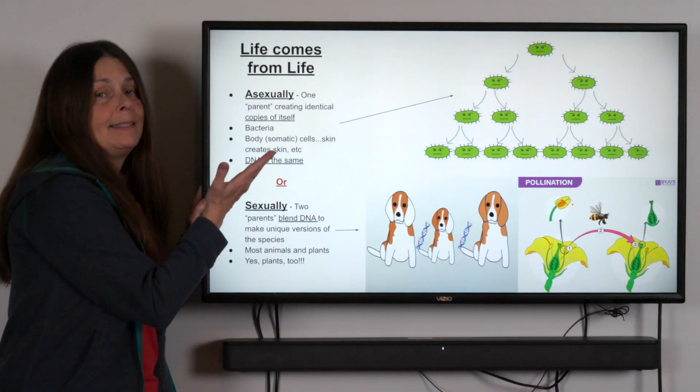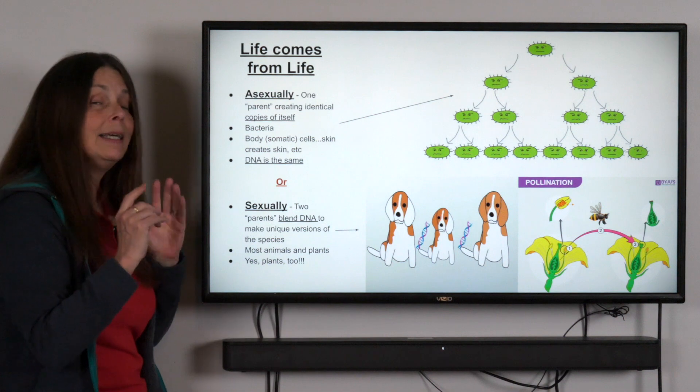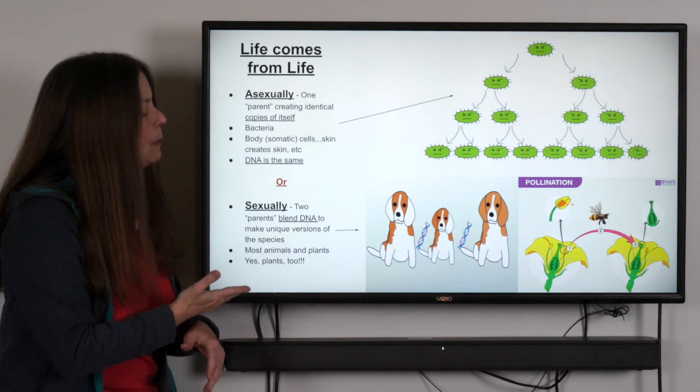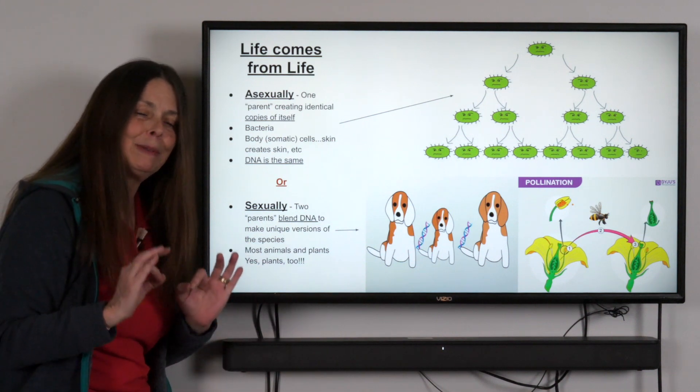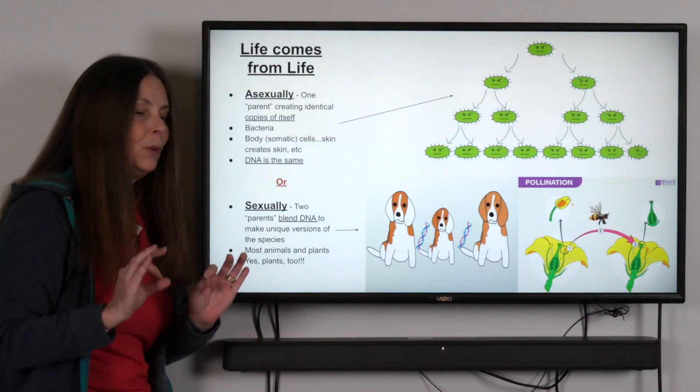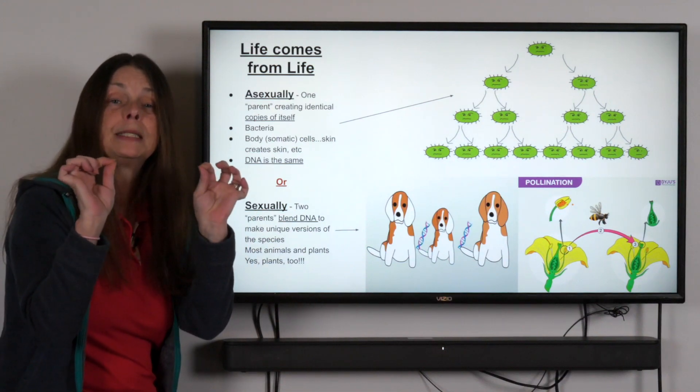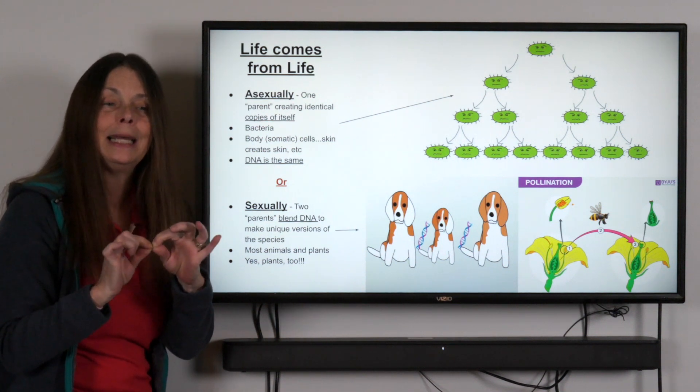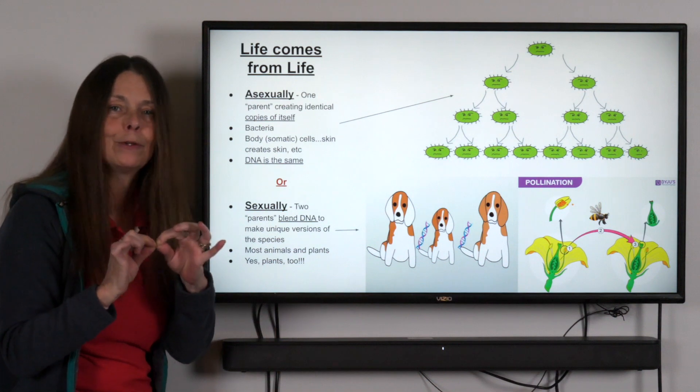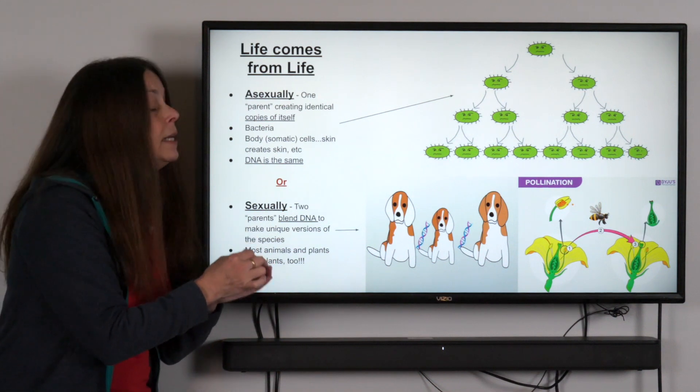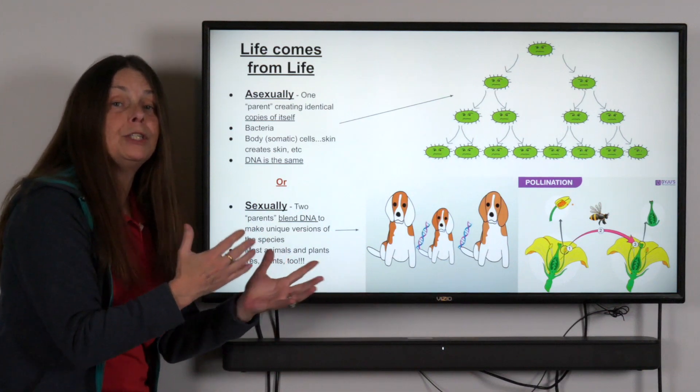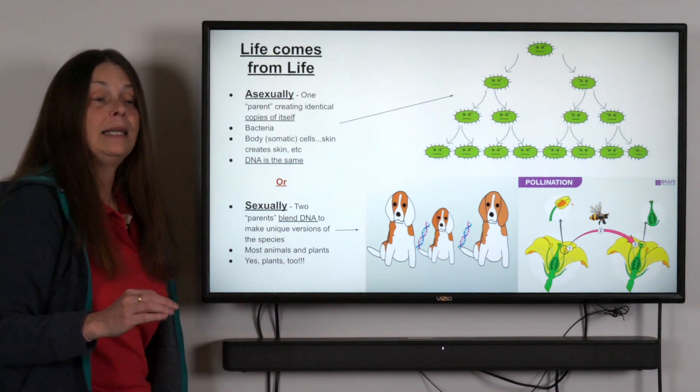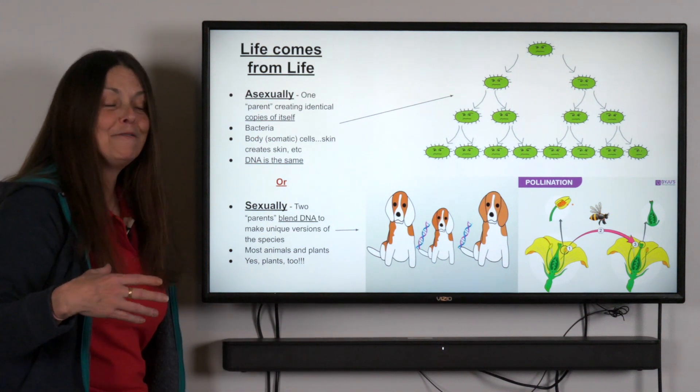You can't ignore that that first cell had to come from somewhere, and that's where the sexual reproduction part comes in. Really all sexual reproduction means is that we are taking DNA from two members of the same species and blending it together to make a unique combination of DNA that does not exist in any other organism. This has some advantages. It creates diversity among the species, not just animals, plants as well.